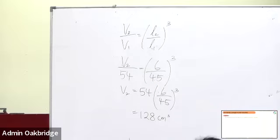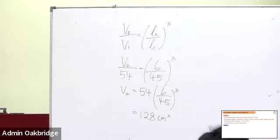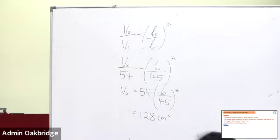Now look at this question. Again, you see the keyword: similar. And this involves liters — liters means volume. And cm squared means area. So it's about area and volume here.